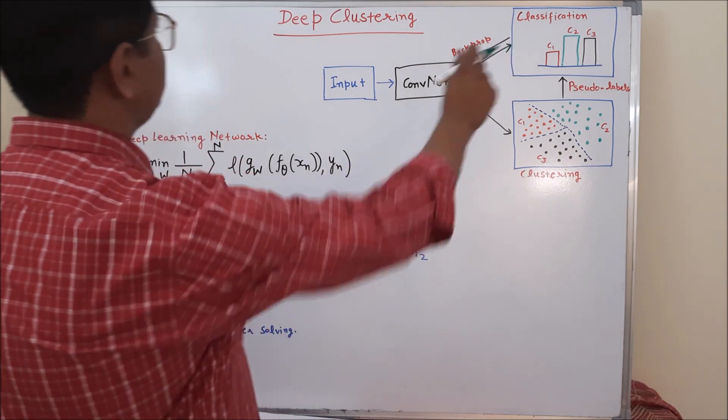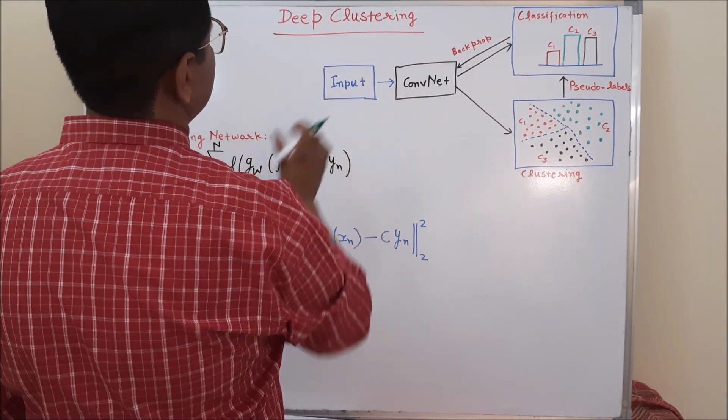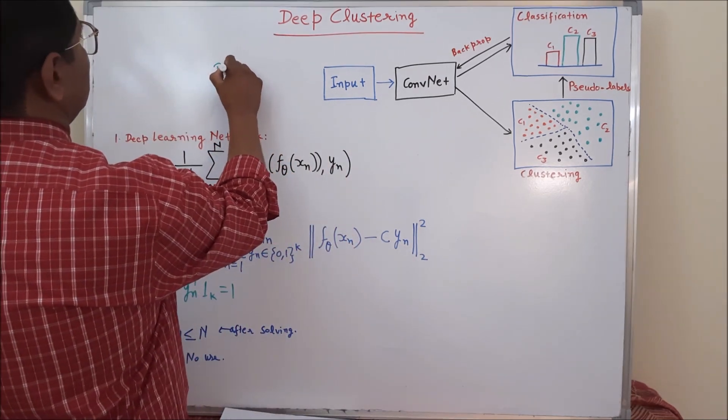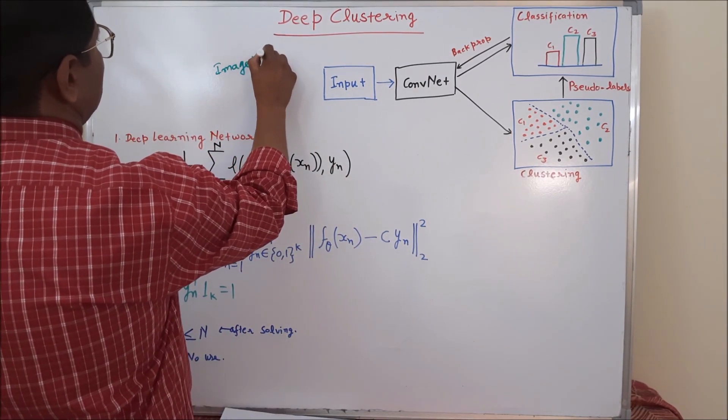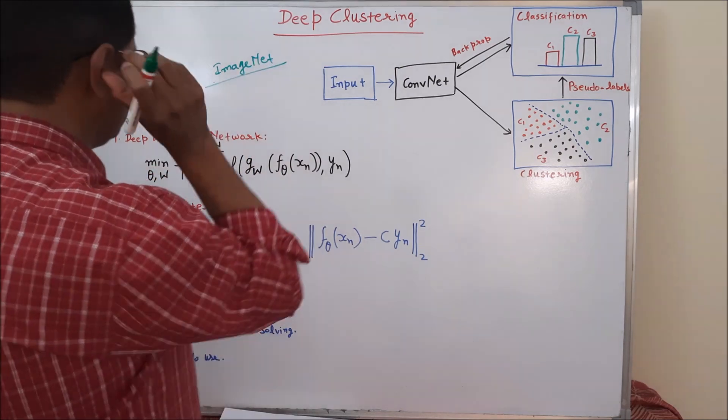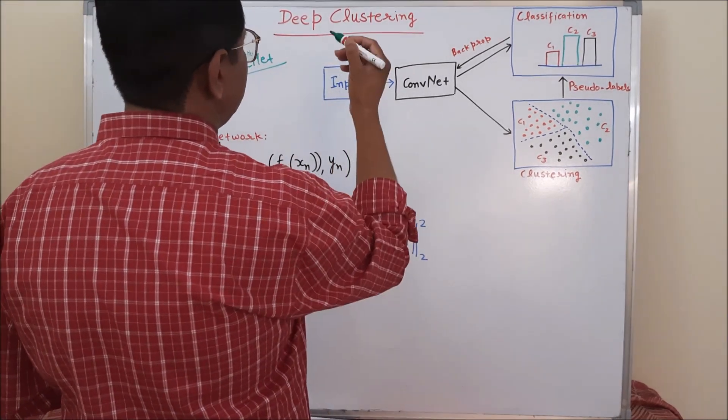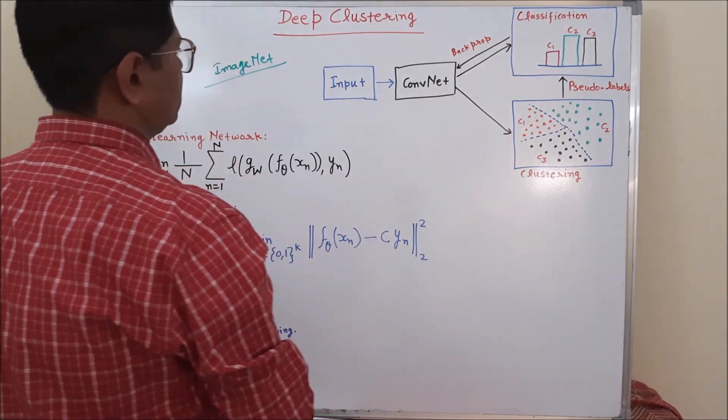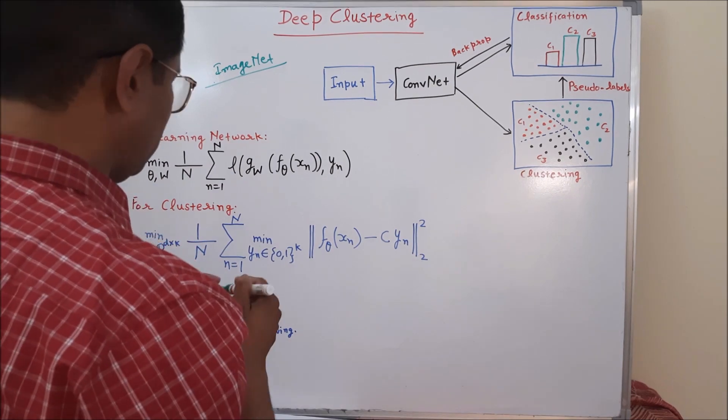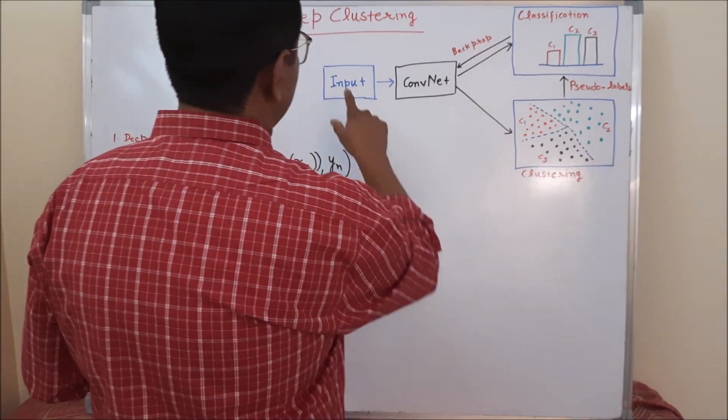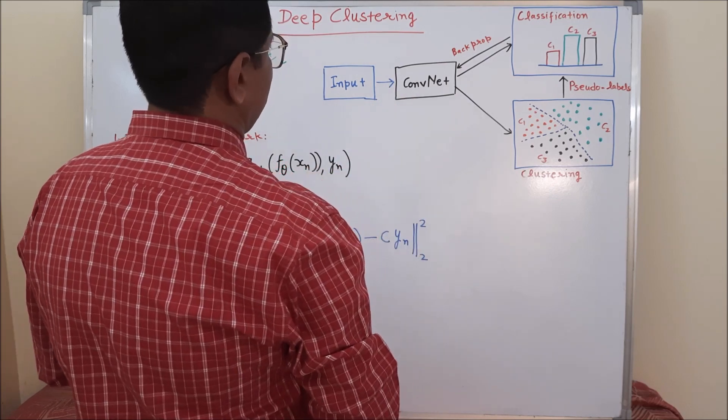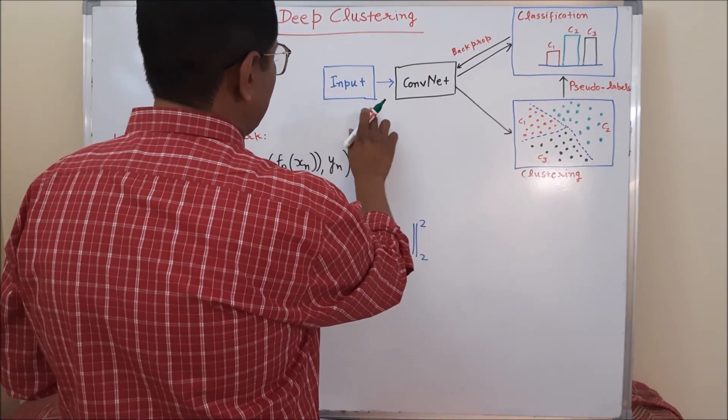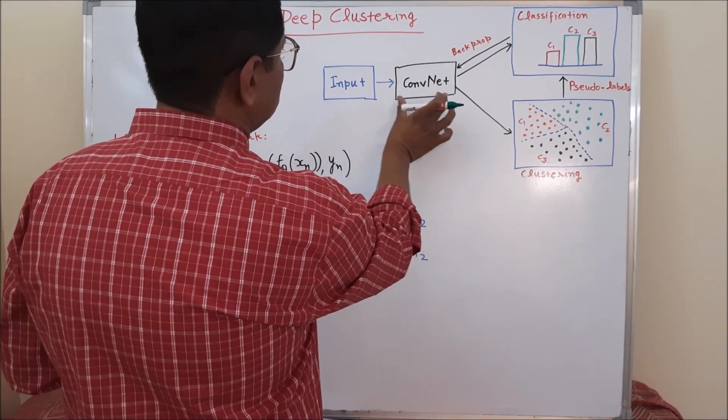Actually, in the deep clustering, the authors have used ImageNet input data. ImageNet input data contains millions of images that are manually labeled into more than 20,000 classes. Now, to get the data in a raw format without having labels, they directly pass the data to the ConvNet.